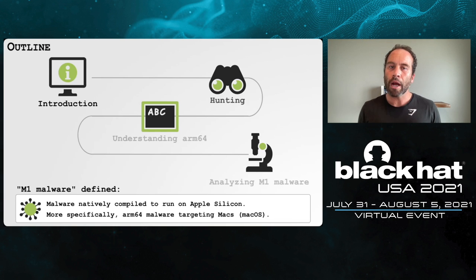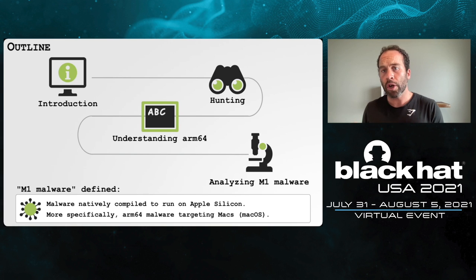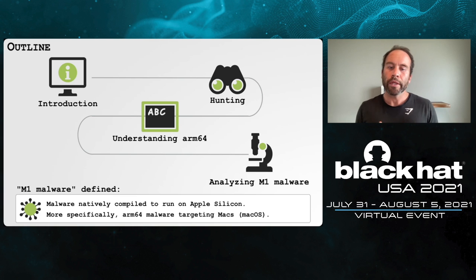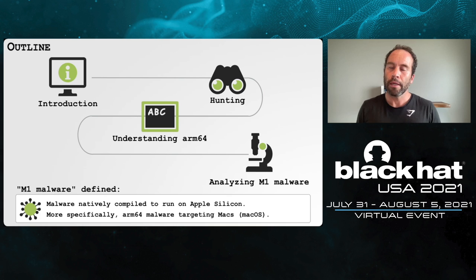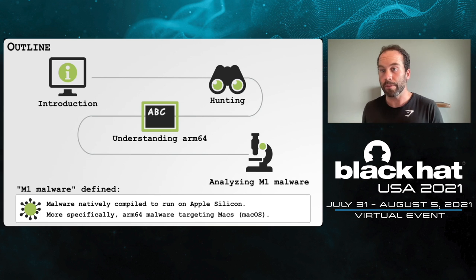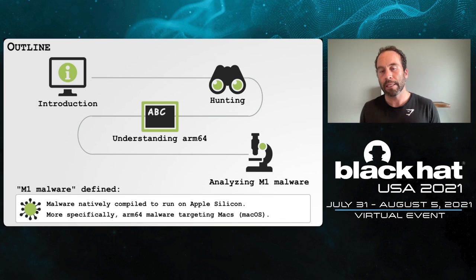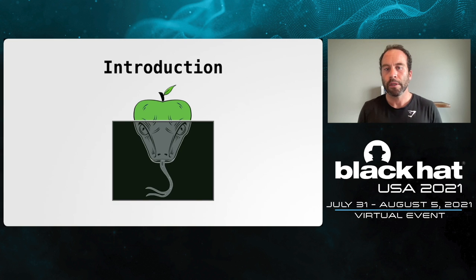Today we're going to be talking about analyzing M1 malware — that is, ARM64 malware targeting macOS. After covering some introductory topics, we're going to talk about finding such malware to analyze. Before we can dive into reverse engineering and disassembling such malware, we need to understand ARM64, the instruction set such malware disassembles into. Finally, we'll apply our understanding of ARM64 to analyze some M1 malware.